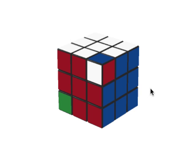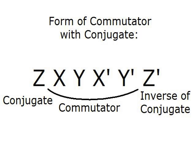Now I'm going to introduce conjugates, because we cannot do this particular commutator without one. A conjugate is needed whenever a commutator cannot be performed in the cube's current state. The general definition is that a conjugate is whatever algorithm is needed in order to be able to do a commutator. We denote the conjugate as Z. After the commutator is performed, we then undo the conjugate. So the full form is: Z, X, Y, X prime, Y prime, Z prime.